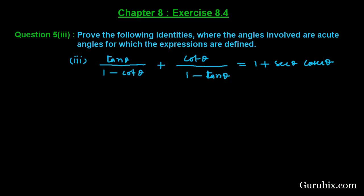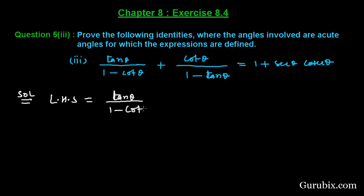Welcome friends, let us solve the third part of question number 5 of Exercise 8.4 of Chapter 8. The question says: prove the following identity where the angles involved are acute angles for which the expressions are defined. We shall start with the left-hand side of the identity, which is tan θ over (1 minus cot θ) plus cot θ over (1 minus tan θ).